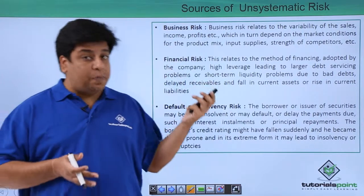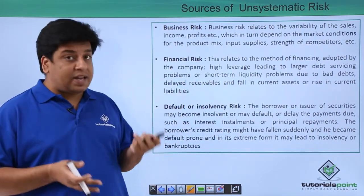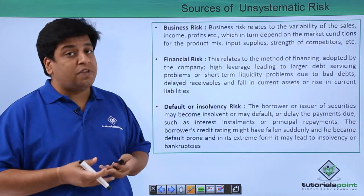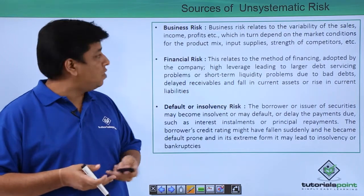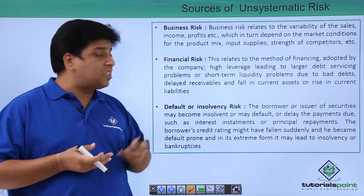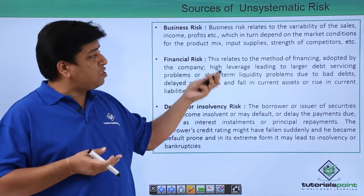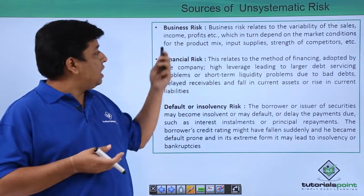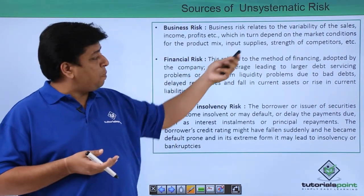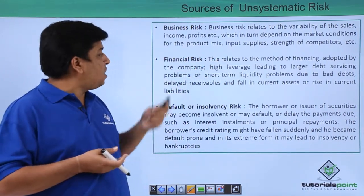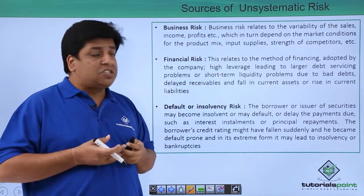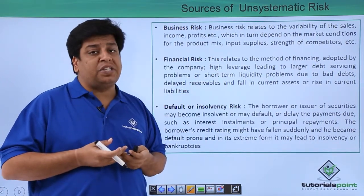First is business risk. Second is financial risk. And third is default or insolvency risk. Business risk relates to the variability of sales, income, profits, etc., which in turn depend on the market conditions for the product mix, input supplies, strength of competitors, etc.